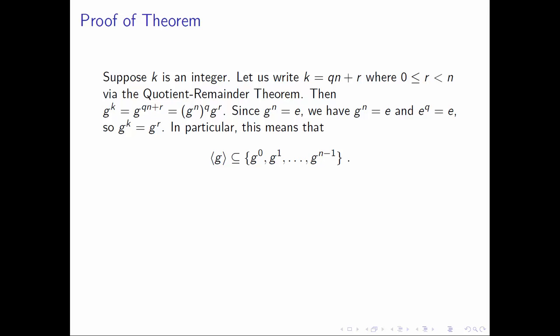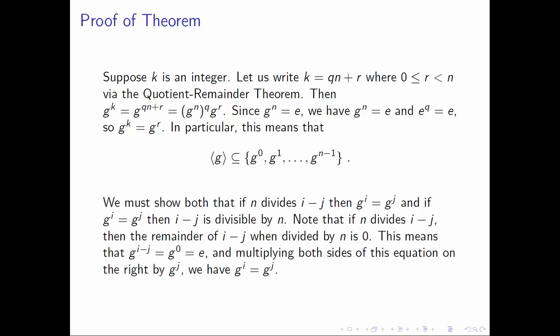This shows that the group generated by g — which a priori was the set of all integer powers of g — in the case that g has finite order, is actually contained in the set {g⁰, g¹, ..., gⁿ⁻¹}. We'll want to show later that every member of this set is distinct. For now, we proceed to the if-and-only-if part of the theorem: if n divides i − j then gⁱ = gʲ, and conversely, if gⁱ = gʲ then i − j is divisible by n.